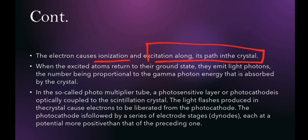When the gamma rays fall on the scintillator, an electron is emitted and this electron causes ionization or excitation along its path in the crystal. When the excited atom returns to the ground state, it emits light photons, and the number of these light photons is proportional to the gamma photon energy absorbed by the crystal.